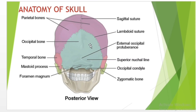On the outside surface at the posterior midline is a small protrusion called the external occipital protuberance, which serves as an attachment site for a ligament of the posterior neck. To either side of this is the superior nuchal line. The nuchal line represents the most superior point at which muscles of the neck attach to the skull, with only the scalp covering the skull above this line.